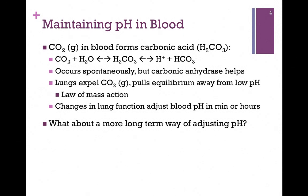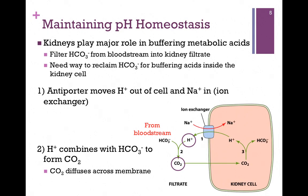Changes in lung function can adjust our blood pH in minutes or hours. But what if we want a more long-term way of adjusting pH — something that would persist over a longer period of time? The kidneys play a major role in buffering metabolic acid.